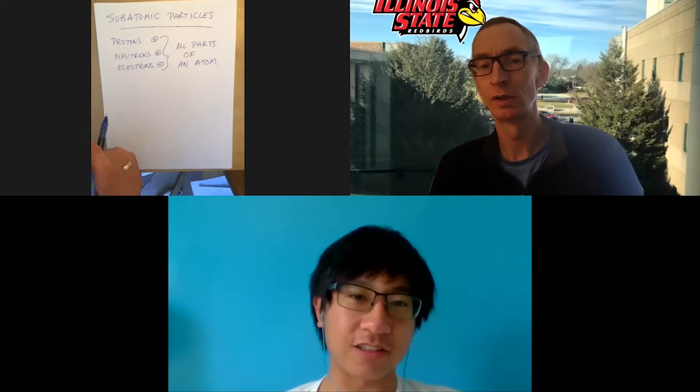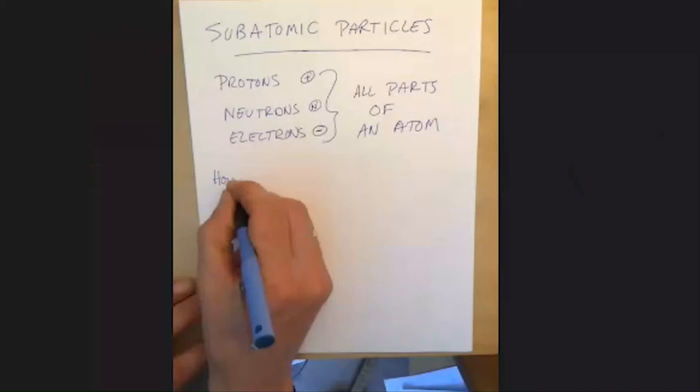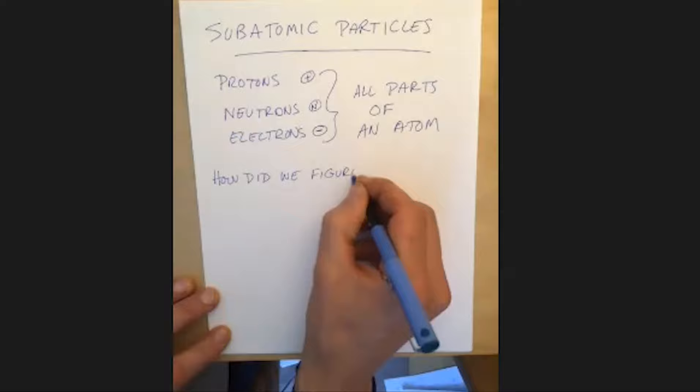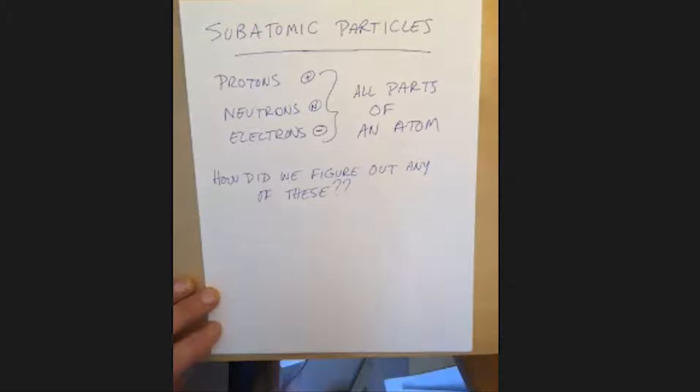That's really the basics of the subatomic particles you need to know for this course. But the main driving question I wanted to discuss today is how did we figure out that the protons and neutrons are all bundled up together in the center and that the electrons are whizzing around it?